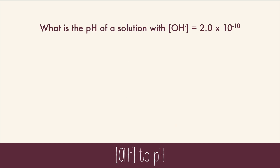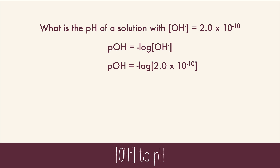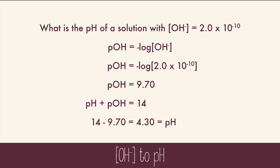What is the pH of a solution with a hydroxide concentration of 2.0×10⁻¹⁰? We know that pOH equals the negative log of the hydroxide concentration, so we can plug in our concentration to find the pOH, which is 9.70. We also know that pH and pOH always add up to 14, so all we have to do is subtract: 14 minus 9.70 gives us 4.30, which is the pH.